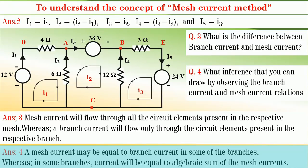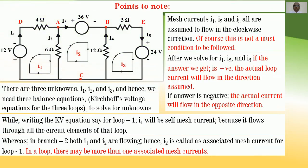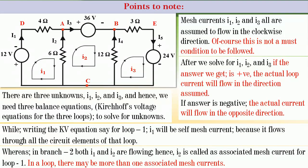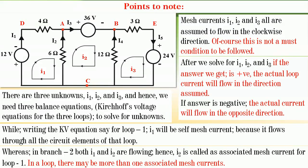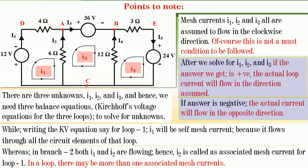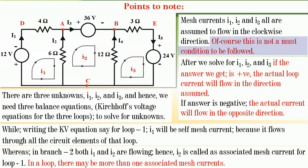Please note these points clearly, because they will help you solve the network using mesh current method correctly. First, all mesh currents i1, i2, and i3 are assumed in the same direction — that is, clockwise. After solving the network, if the answer for a mesh current is positive, the actual loop current flows in the assumed direction; if negative, it flows in the opposite direction. Assuming mesh currents in the same direction is not a must condition — you may note that.